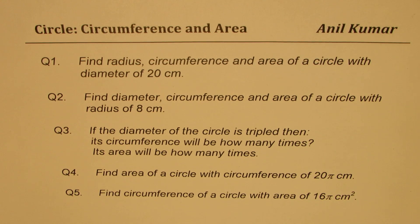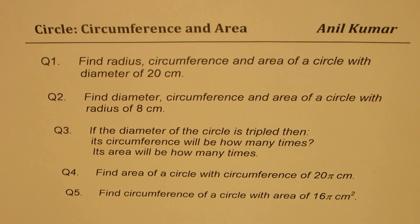Question number one: find radius, circumference, and area of a circle with diameter of 20 centimeters. Question number two: find diameter, circumference, and area of a circle with radius of 8 centimeters. So in the first two questions, we are given radius or diameter, and we have to find what circumference and area could be.